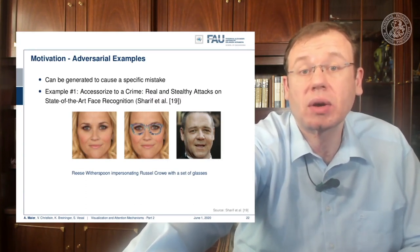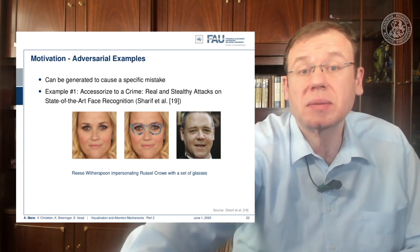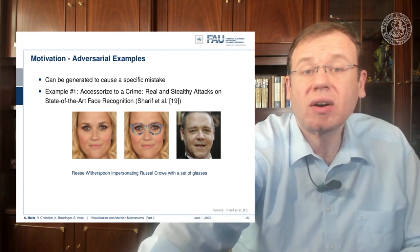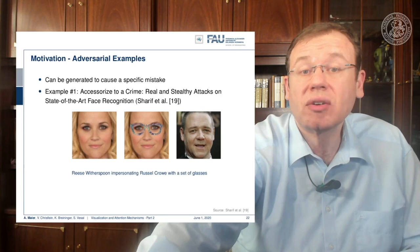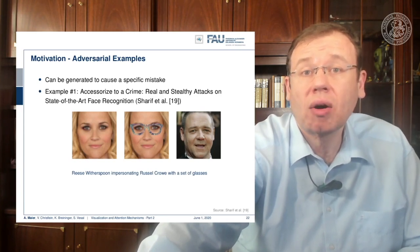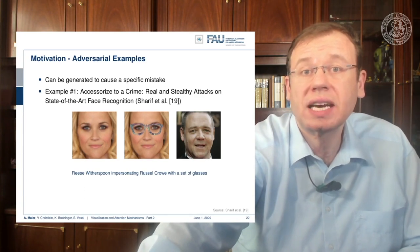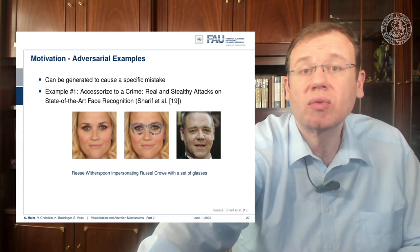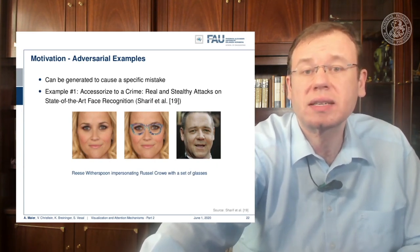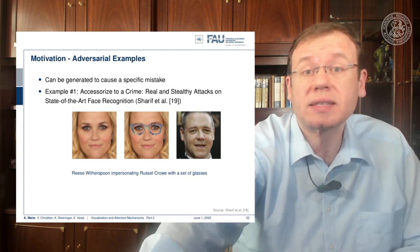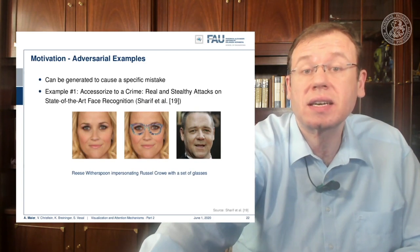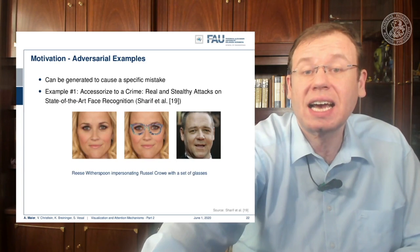In contrast to optical illusions, we can construct adversarial examples — they are generated to cause a specific mistake. Here is another example: an attack on state-of-the-art face recognition, which you find in reference 19. They defined a set of pixels which essentially takes the shape of glasses. These glasses can be adjusted — arbitrary color values are chosen in a way that leads to the wrong identification. If you take Reese Witherspoon, add these magical colorful glasses, they specifically strengthen activations that lead to a wrong classification.